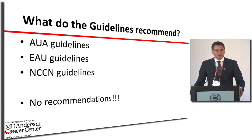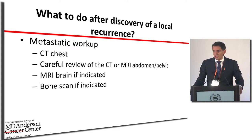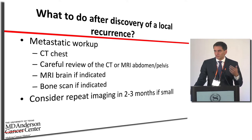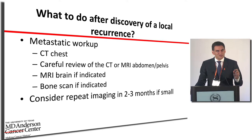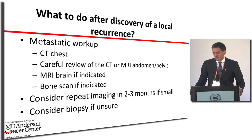After finding a local recurrence, we need to determine if the patient has metastasis. We must do a thorough workup: CT of the chest, personal review of MRI or CT of the abdomen, and if indicated, MRI of the brain or a bone scan. If the suspected recurrence is very small, waiting and repeating imaging in two to three months is acceptable. A biopsy can be done if clinically indicated but is not mandatory.